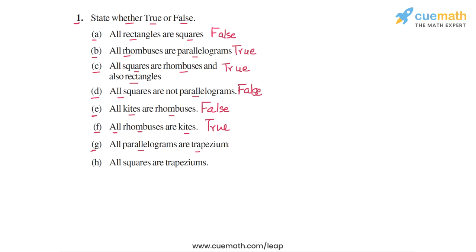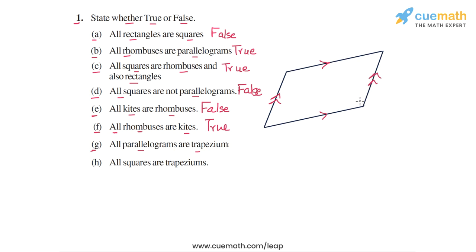Statement G says: all parallelograms are trapeziums. A parallelogram is a quadrilateral in which both pairs of opposite sides are parallel to each other. A trapezium is a quadrilateral in which at least one pair of sides is parallel. Because a parallelogram has both pairs of sides parallel, it is a special case of a trapezium. Statement G is true.